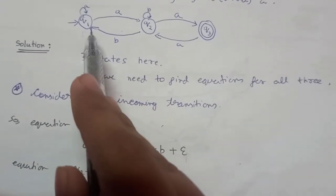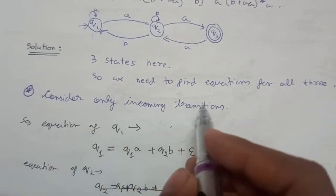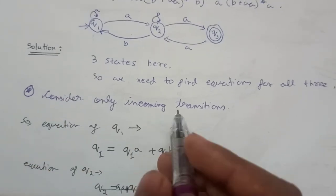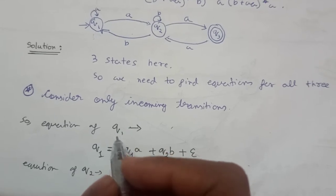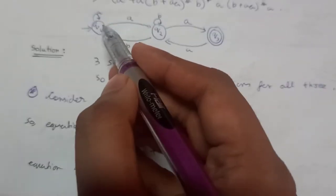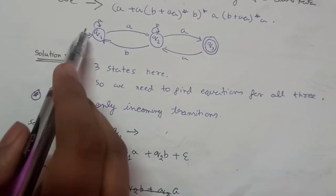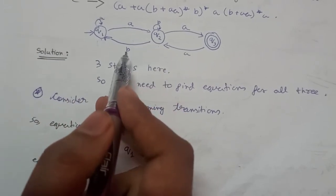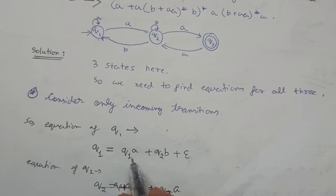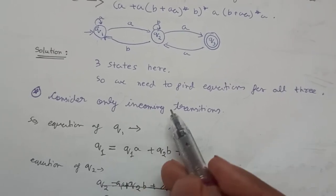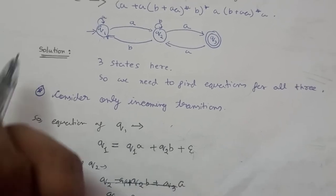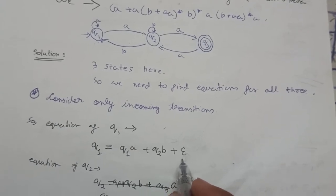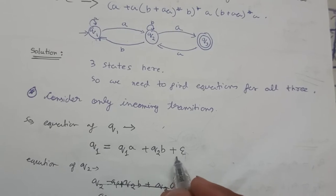We'll first make the equation for Q1. Consider only the incoming transitions when making the equation for a state. The incoming transitions into Q1 are: from Q1 taking input A it reaches Q1, and from Q2 taking input B it reaches Q1. Also, since Q1 is the initial state, there is another way to reach Q1 — that is null, because even without accepting anything it is in the initial state.